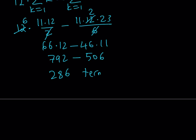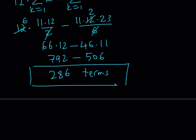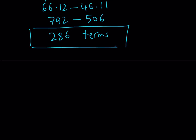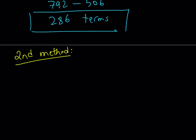So this expression has 286 terms. This brings us to the end of the first method. The second method is a little different but it's basically counting the same thing, so we're going to use the multinomial theorem for this one.